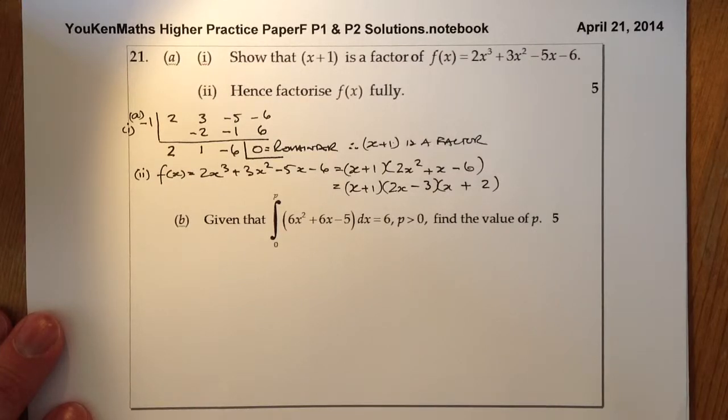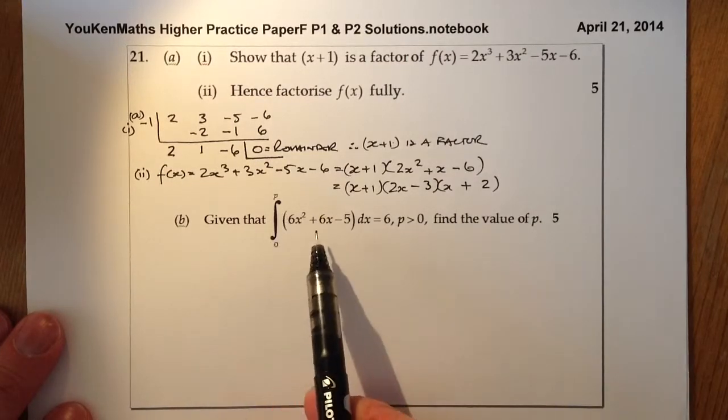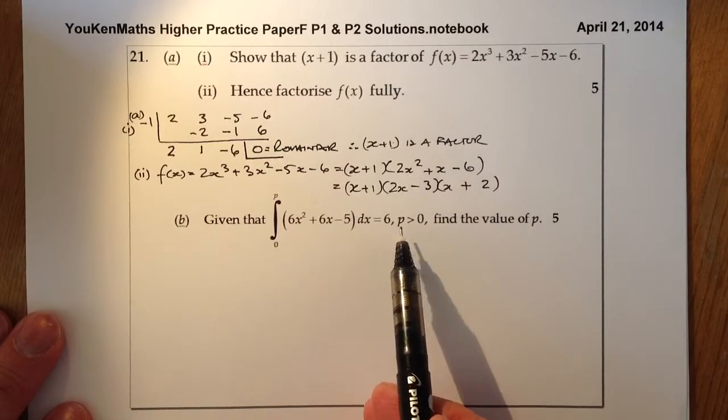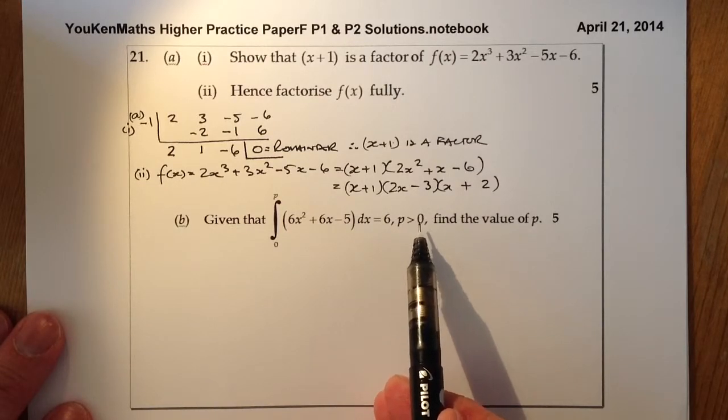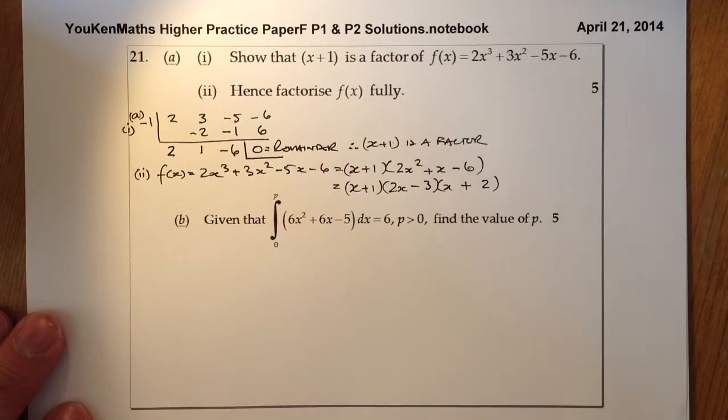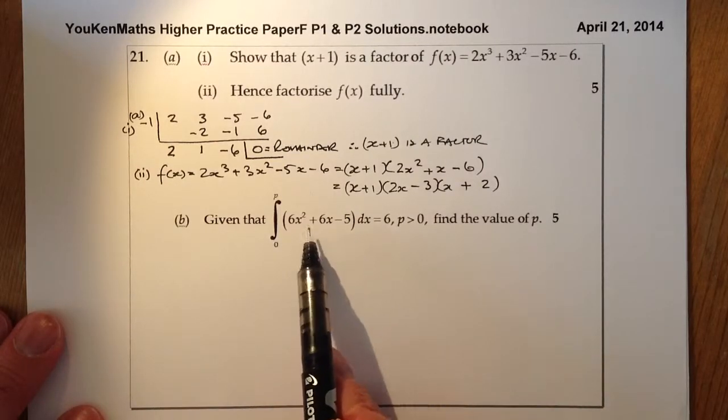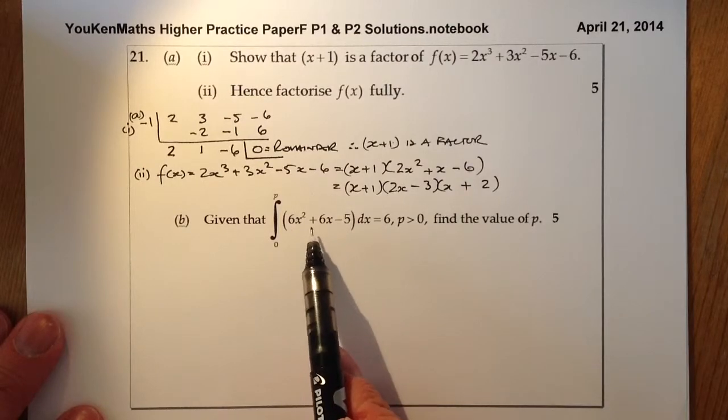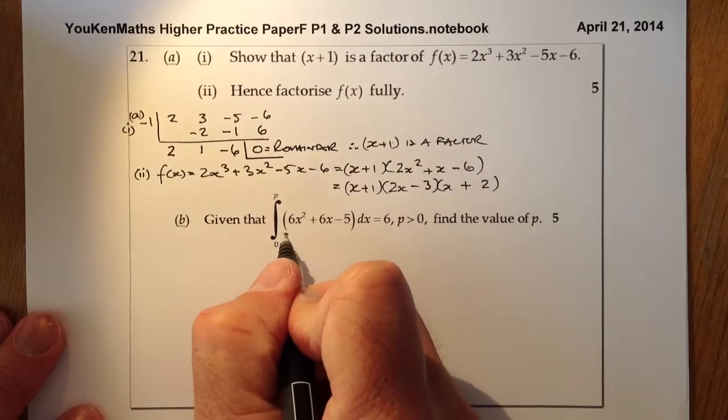Now part B. Given that we've got an integral equal to 6 with p > 0, find the value of p. 5 marks for this question. We've got it in a form where we can integrate, so let's go ahead and do that.